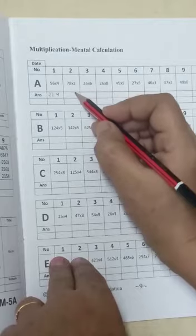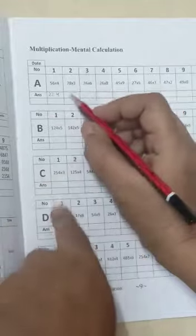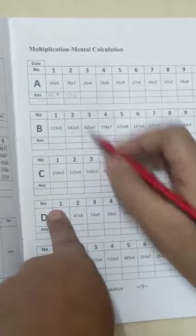8 twos are 16, 6, 1 carry forward. 7 twos are 14, 14 plus 1 is 15. 1, 56 is your answer.